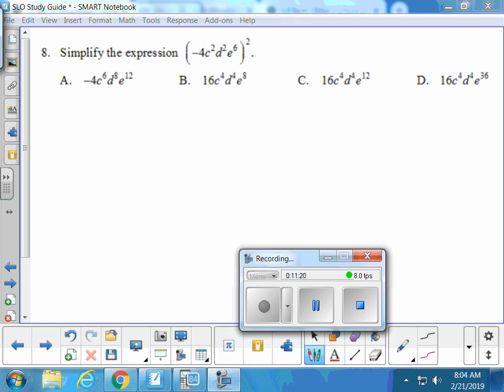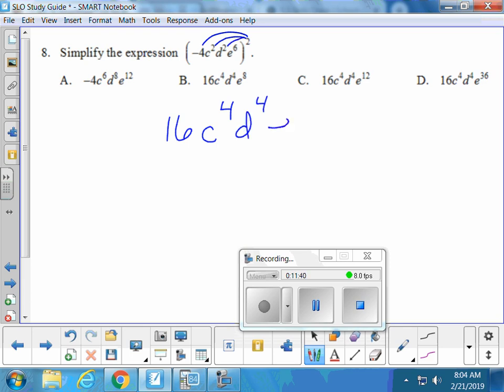Number eight. What are we going to do? Distribute this a little 2. So the negative four squared would turn into a positive 16. What would become my C exponent? Four, because it's two times two. What about my D exponent? Four. And what about E's exponent? Six. So which answer choice is that? Yep.